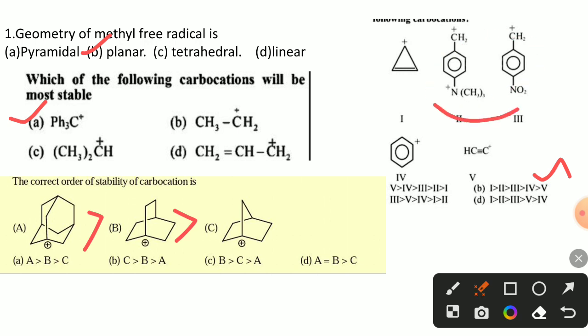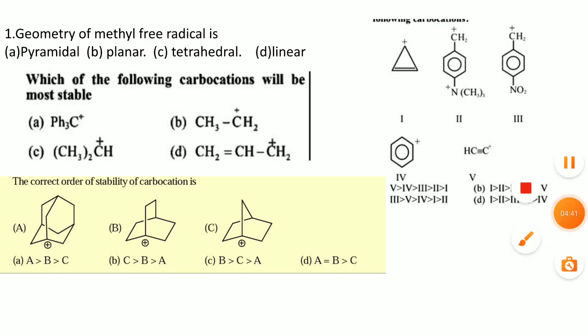In these two carbocations, the NO2 group is an electron-withdrawing group. Carbocations having a nitro group — since NO2 is an electron-withdrawing group — it increases charge density on the cationic carbon, which destabilizes the carbocation. Comparing these two groups, the NO2 group is a stronger withdrawing group, so that carbocation is less stable. Therefore, option B is the correct answer.